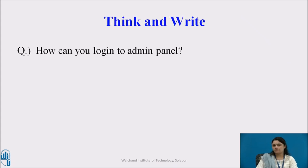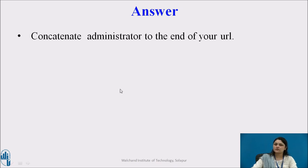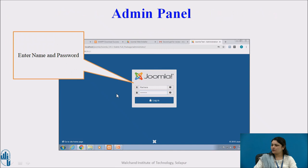Here is a question for you: How can you log in to the admin panel? Take a pause, try to recall, and answer this. Here is the answer: just concatenate '/administrator' at the end of your URL, or search the Joomla admin site on Google. Open your browser, search for 'Joomla administrator', get the link, enter your credentials, and you are done.